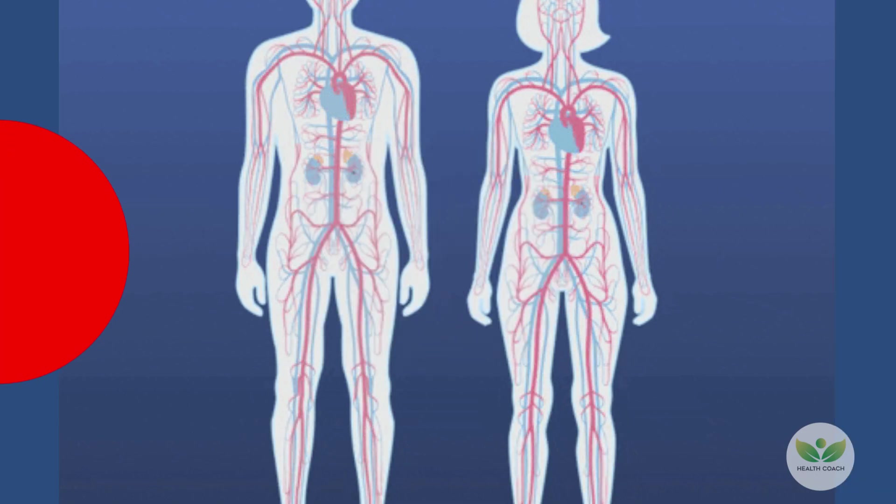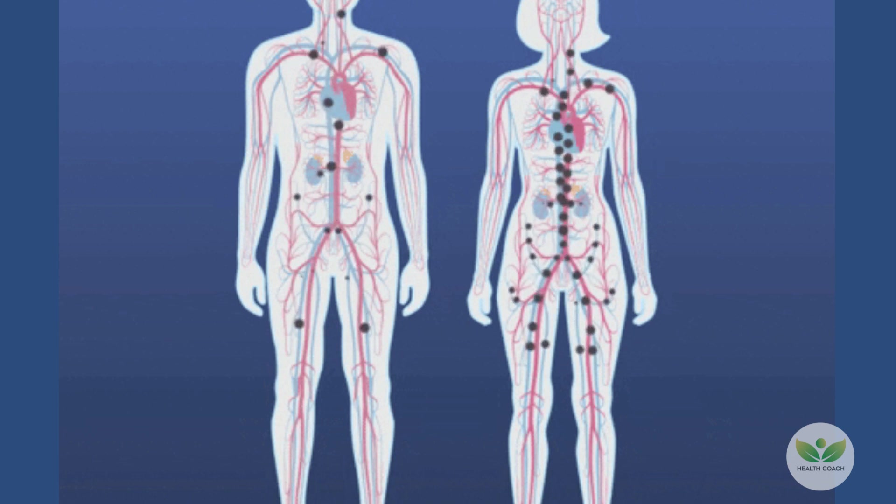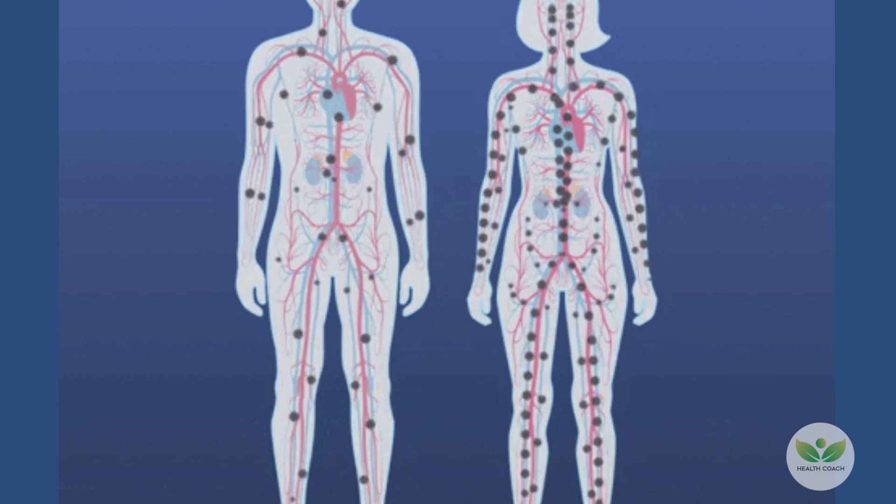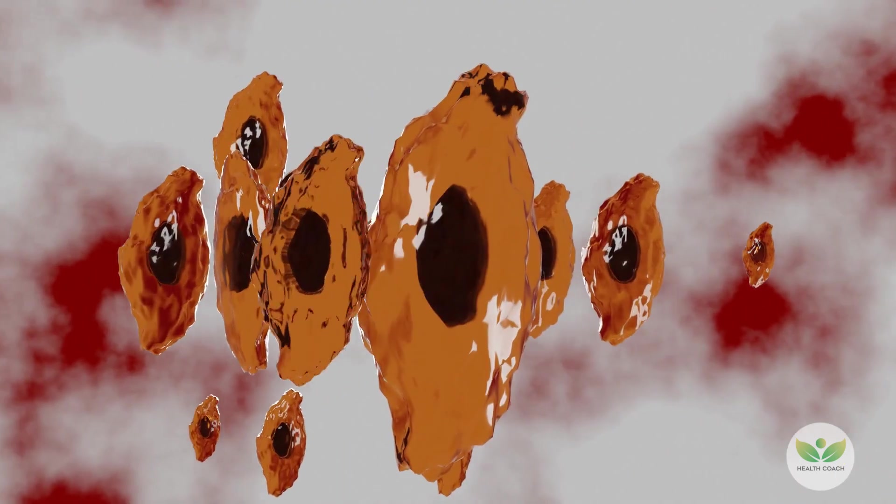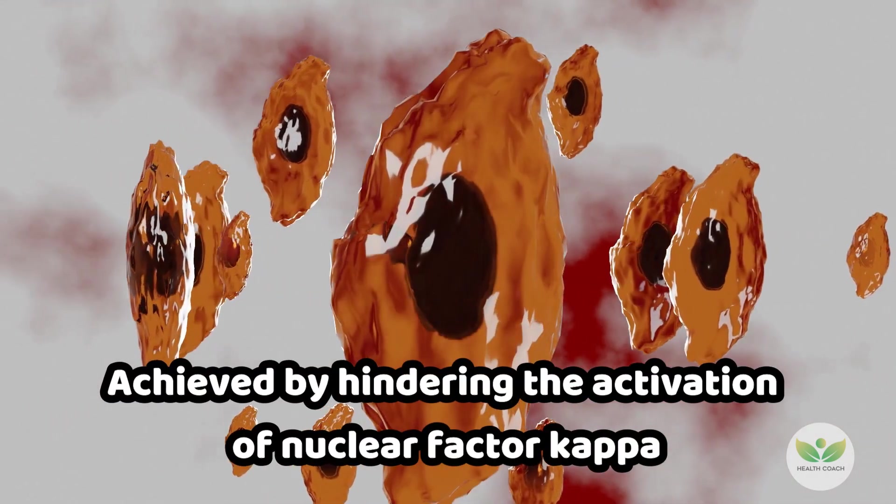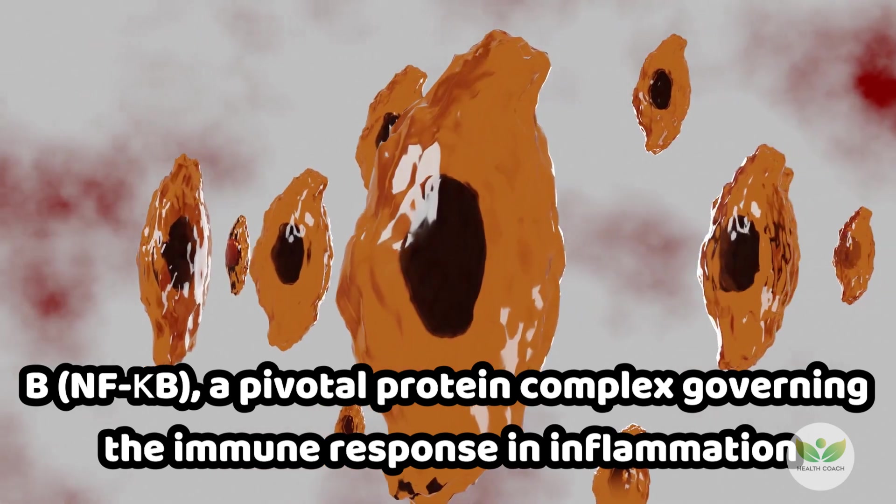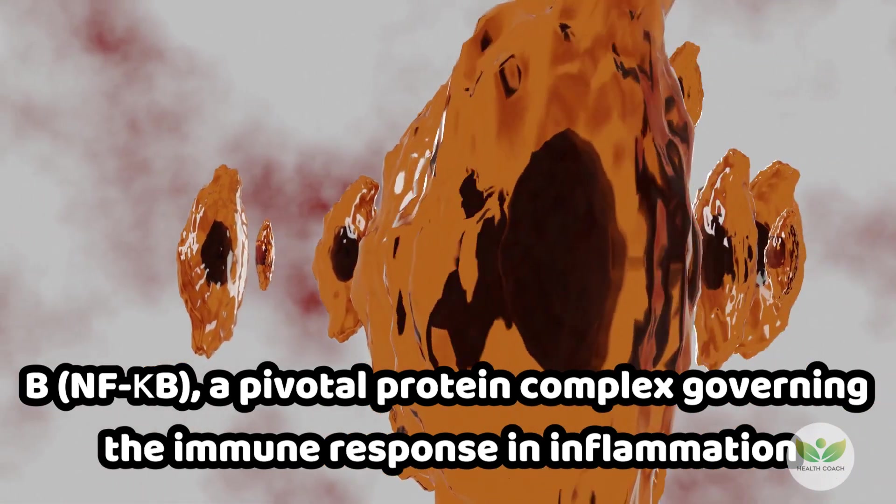Number 6: Anti-inflammatory properties. Persistent inflammation poses a heightened risk to nerve health, notably in conditions such as neuropathy. Benfotiamine takes center stage with its robust anti-inflammatory attributes, primarily achieved by hindering the activation of nuclear factor kappa B, or NF-kappa B, a pivotal protein complex governing the immune response and inflammation.